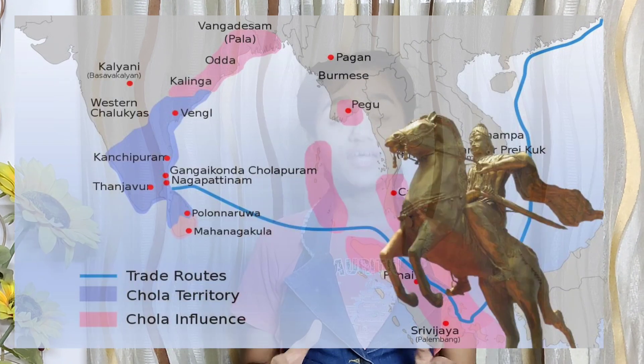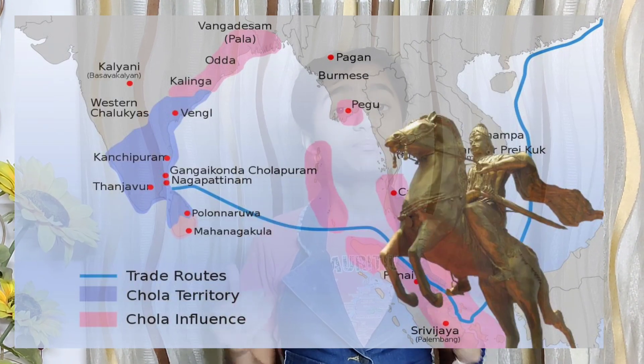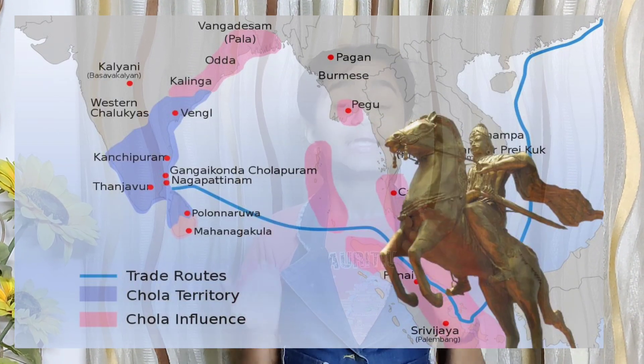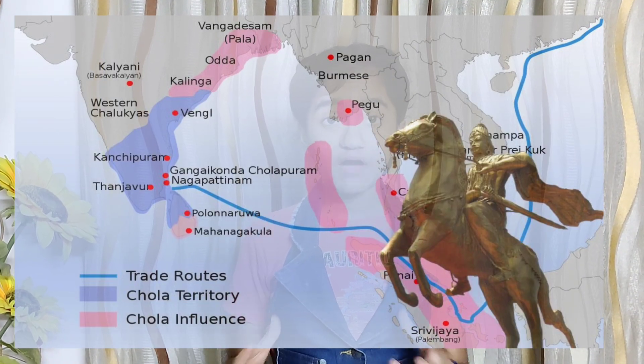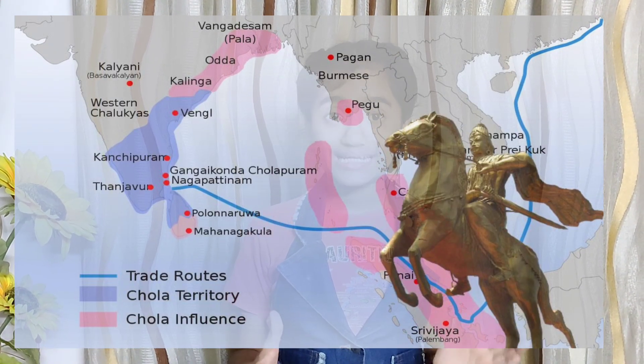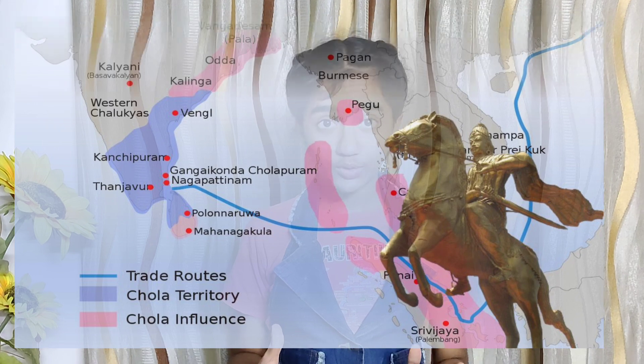The Cholas were a very powerful dynasty, a very powerful empire that originated from southern India during the 7th century. Their whole kingdom was surrounding and consisting of the Tamil region.